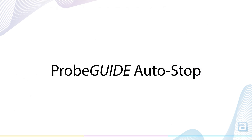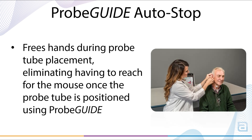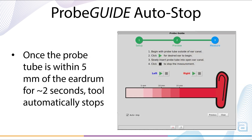ProbeGuide AutoStop: To simplify probe tube placement and free up the clinician's hands, ProbeGuide can now be set to AutoStop. Once ProbeGuide determines the probe tube is within 5mm of the eardrum, the tool will stop without the need to use the mouse. By default, AutoStop is checked. Simply uncheck the box if you prefer to manually stop ProbeGuide by clicking the Stop button.